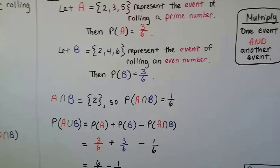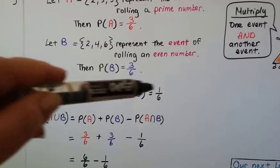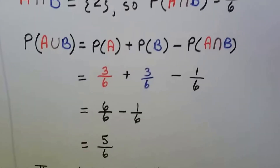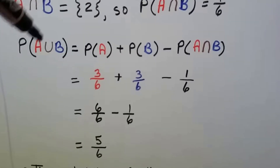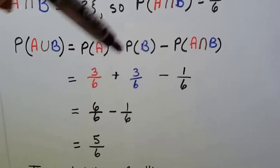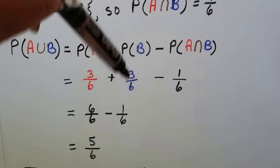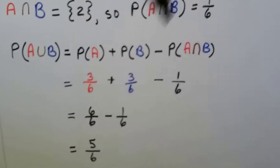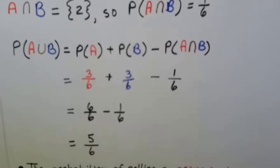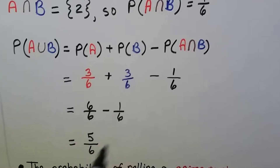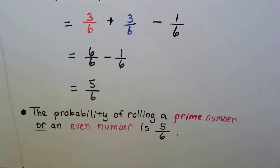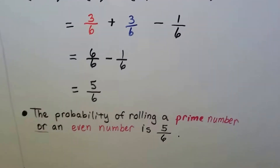According to our theorem, the probability of A union B equals the probability of A (3/6) plus the probability of B (3/6) minus where they intersect (1/6). That gives us 6/6 minus 1/6, which is 5/6. So the probability of rolling a prime number or an even number is 5/6.